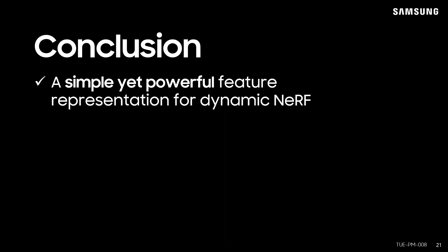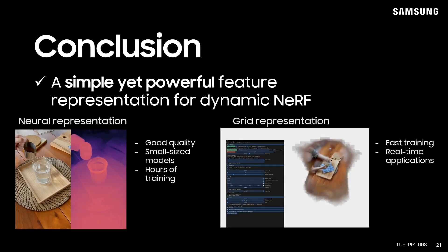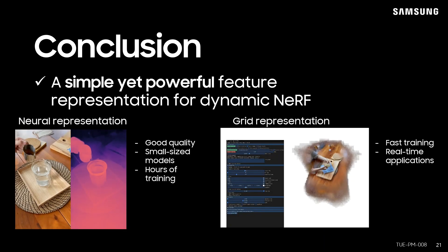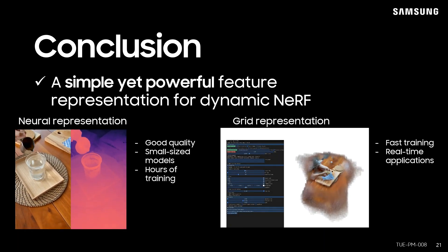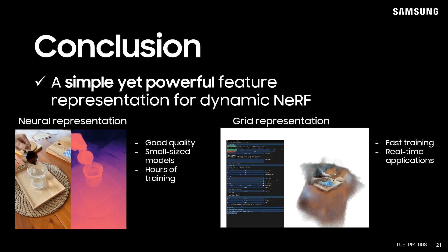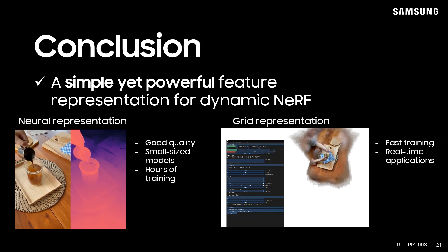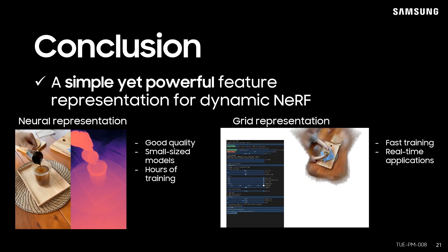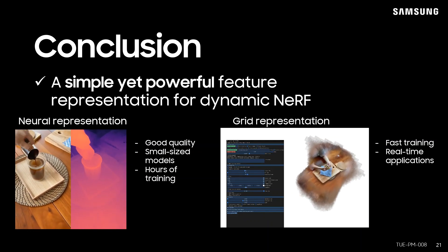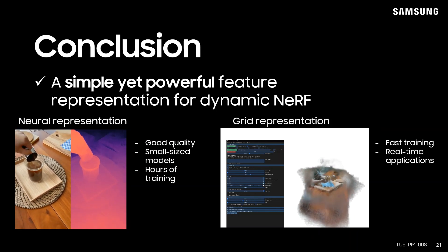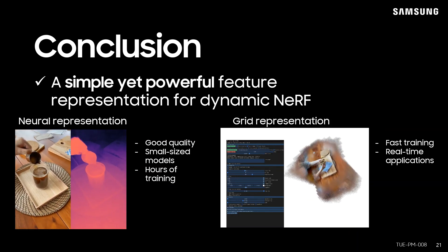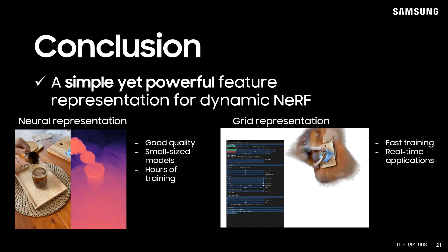In conclusion, we propose a simple yet effective feature representation method for dynamic NeRF. While the neural representation model shows high-quality rendering results owing to the representation power of neural networks, it requires hours of training. On the other hand, the grid representation is able to render dynamic scenes in less than a second after a few minutes of training, which makes it more practical for real-world applications.